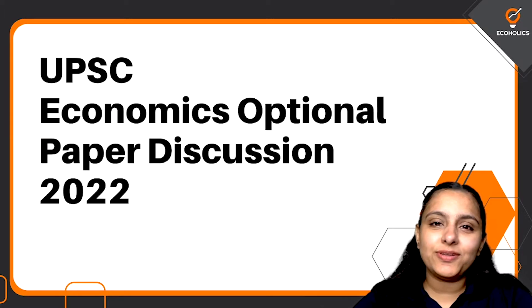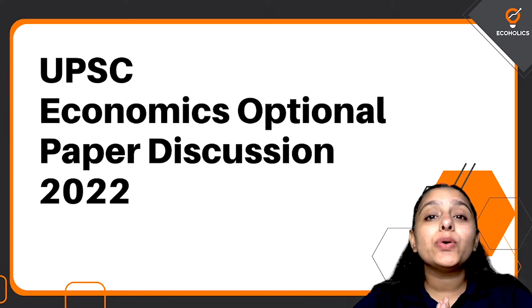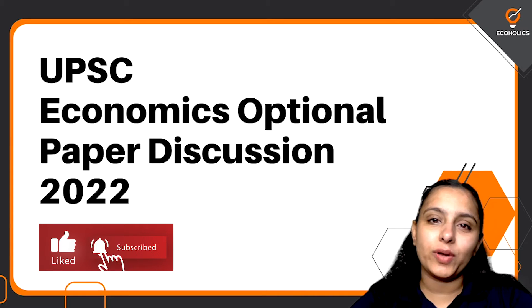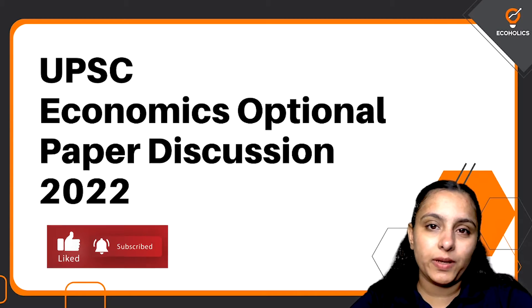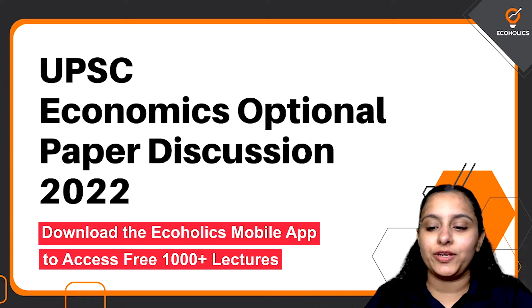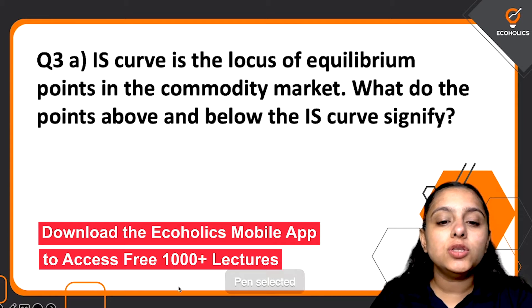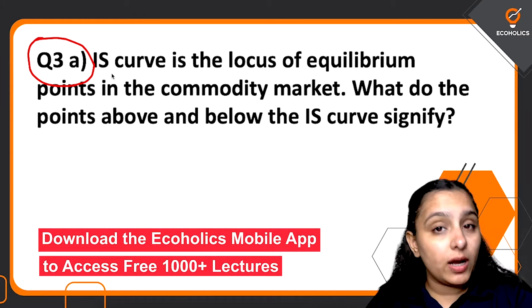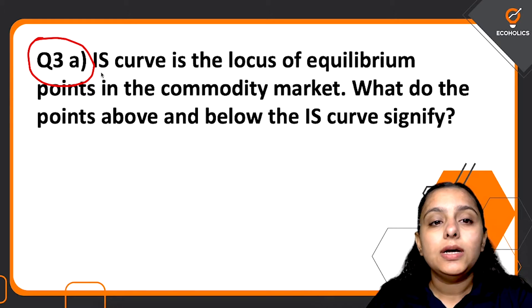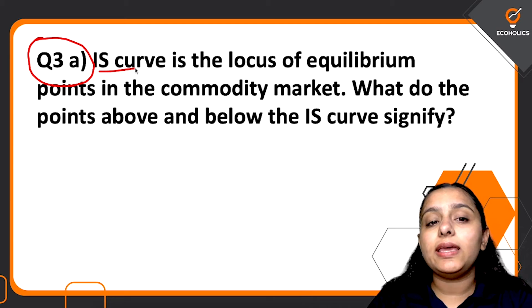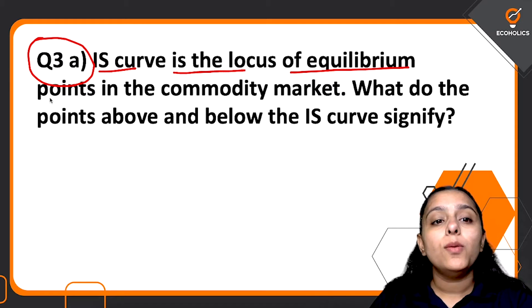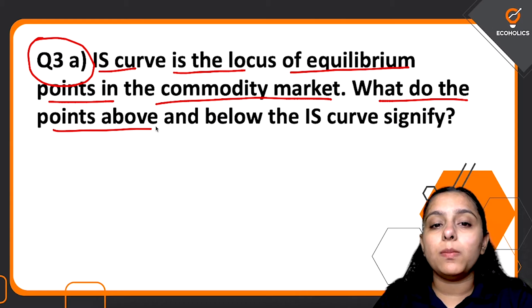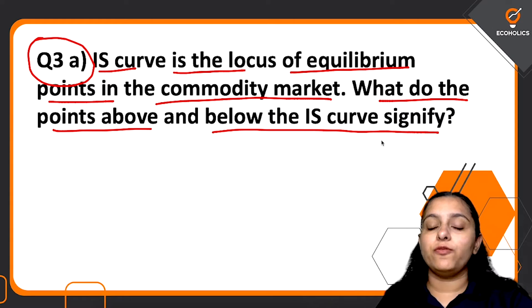Hello everyone, welcome back to the channel of Ecoholics. Here I am again with the discussion of one another question from Economics Optional paper from the year 2022. This question is question number three, part A — from the macro module. It asks: the IS curve is the locus of equilibrium points in the commodity market. What do the points above and below the IS curve signify?